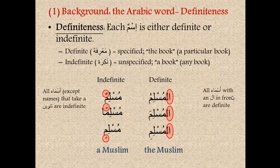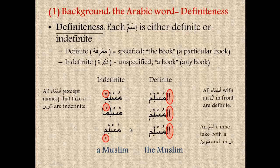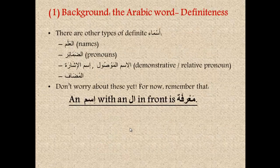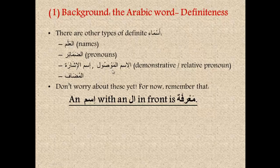Take-home lessons: all asma' with an alif-lam in front are definite. So if you see an ism with an alif-lam in front, you should immediately remember that it is definite and specified. Most asma' that take a tanwin at the end are indefinite — except proper nouns or names. And of course, an ism cannot take both a tanwin and an alif-lam. There are also other categories of asma' considered definite or ma'rifah: these include alam, which are proper names; al-damir, which are pronouns; ism al-ishara and ism al-mawsool, the demonstrative and relative pronouns; and the mudaf. We will talk about each of these in more detail later on.